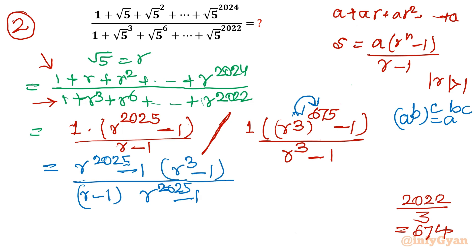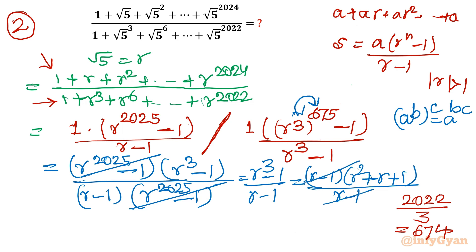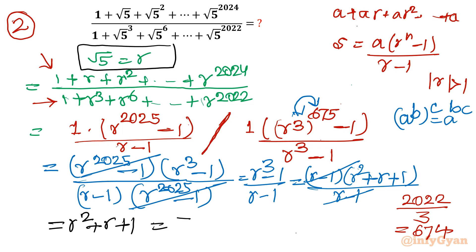So r² + r + 1 is our result — the same result as Method 1. Let's substitute the value of r = √5: (√5)² + √5 + 1 = 5 + √5 + 1 = 6 + √5. Both methods give the same final answer: 6 + √5.